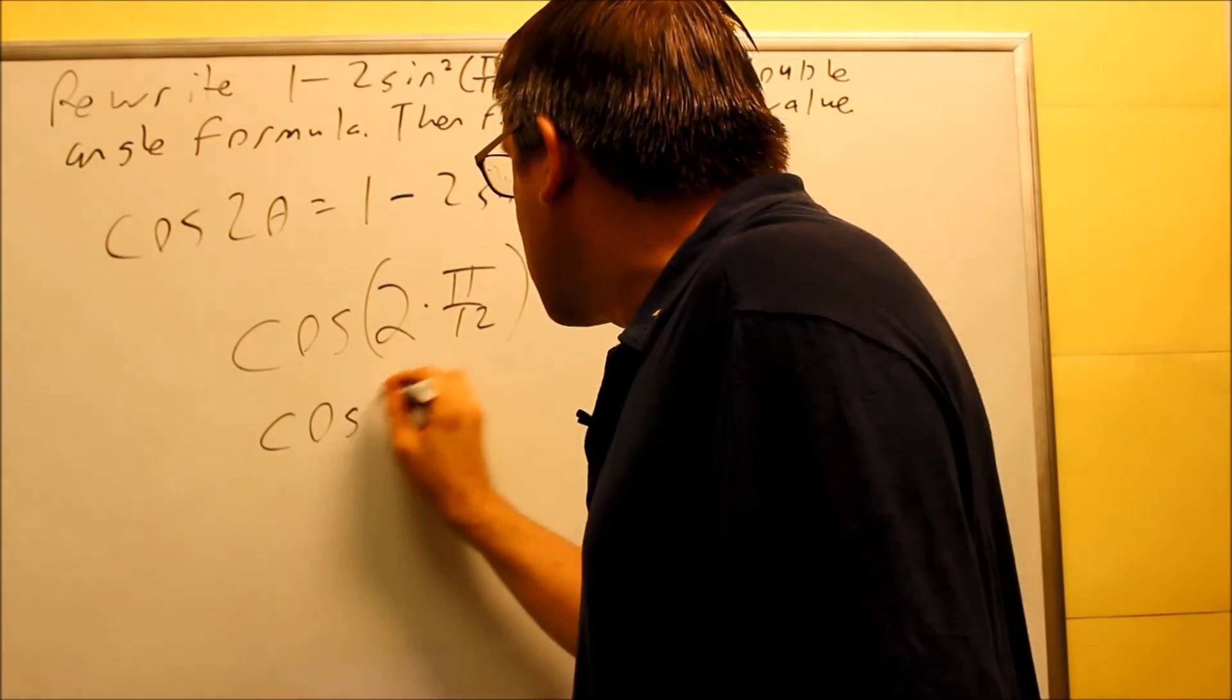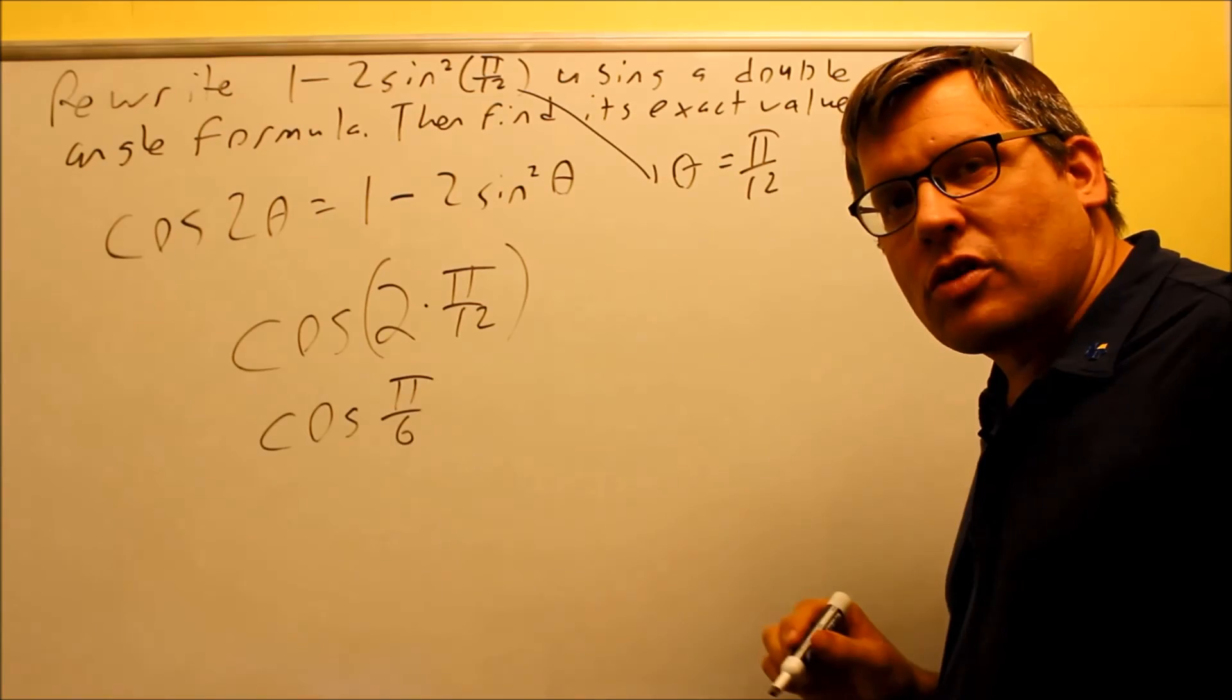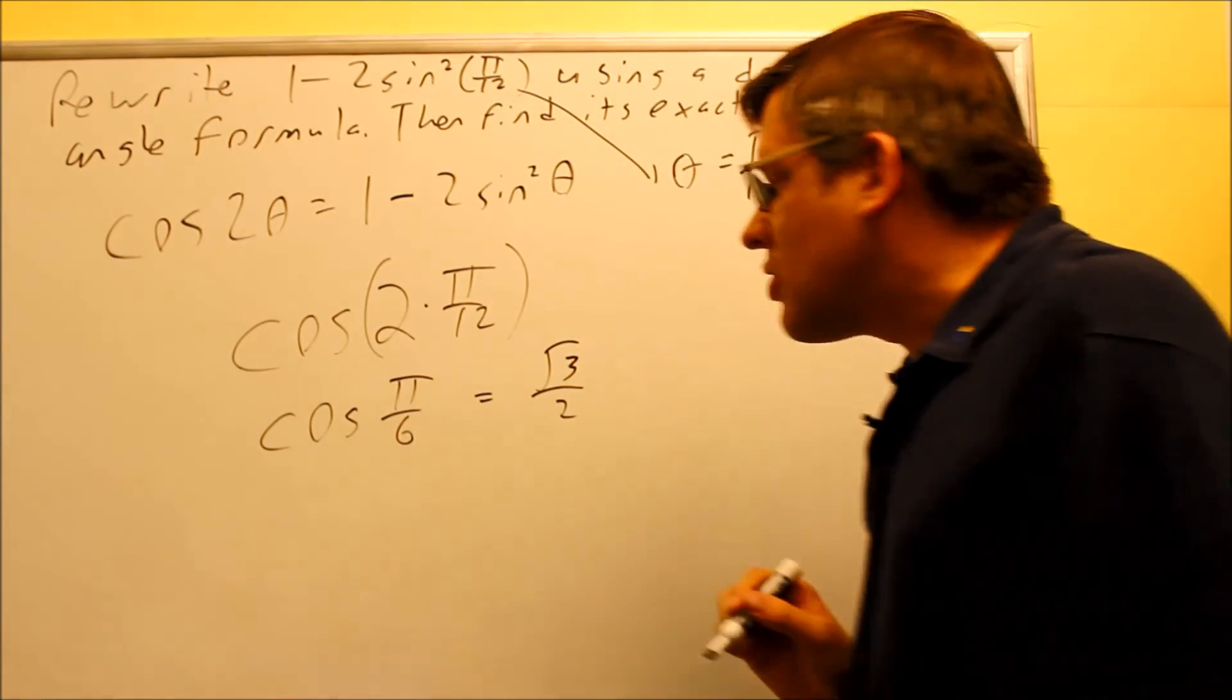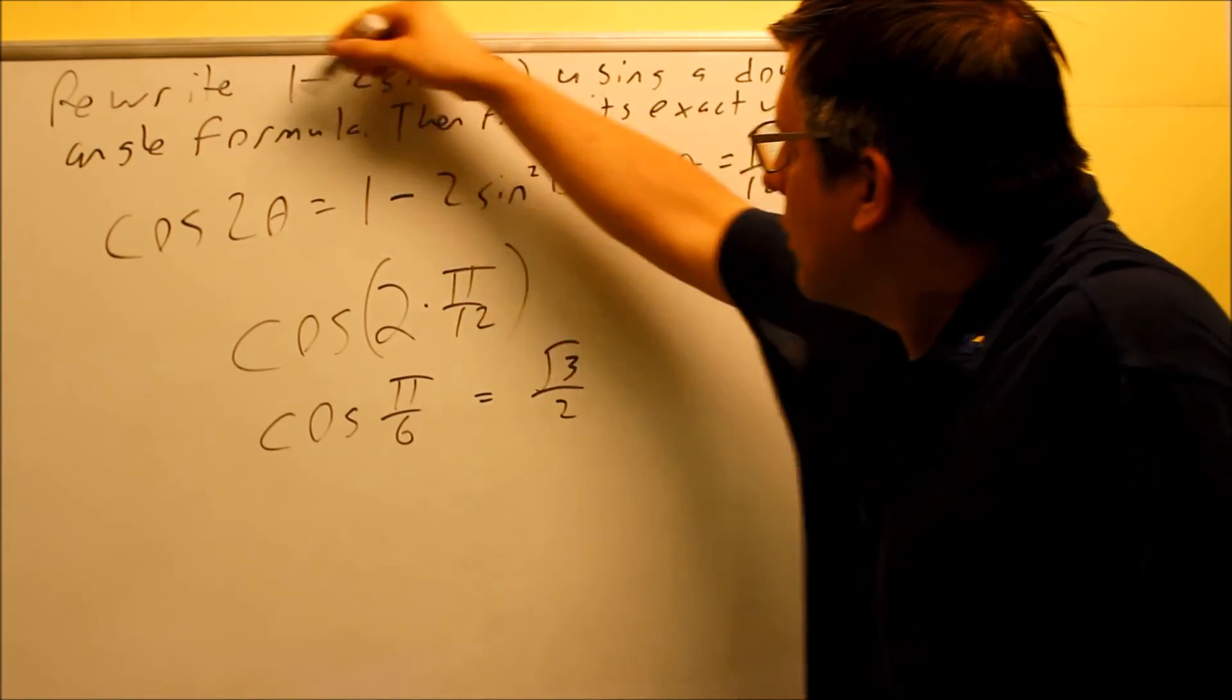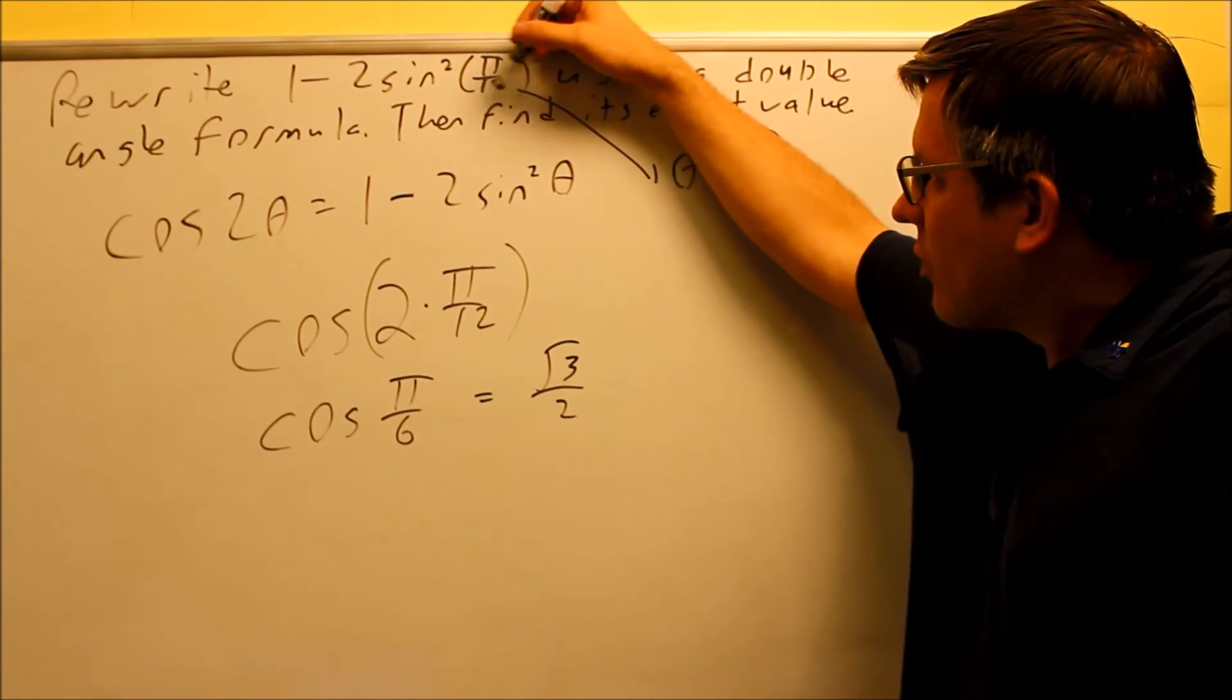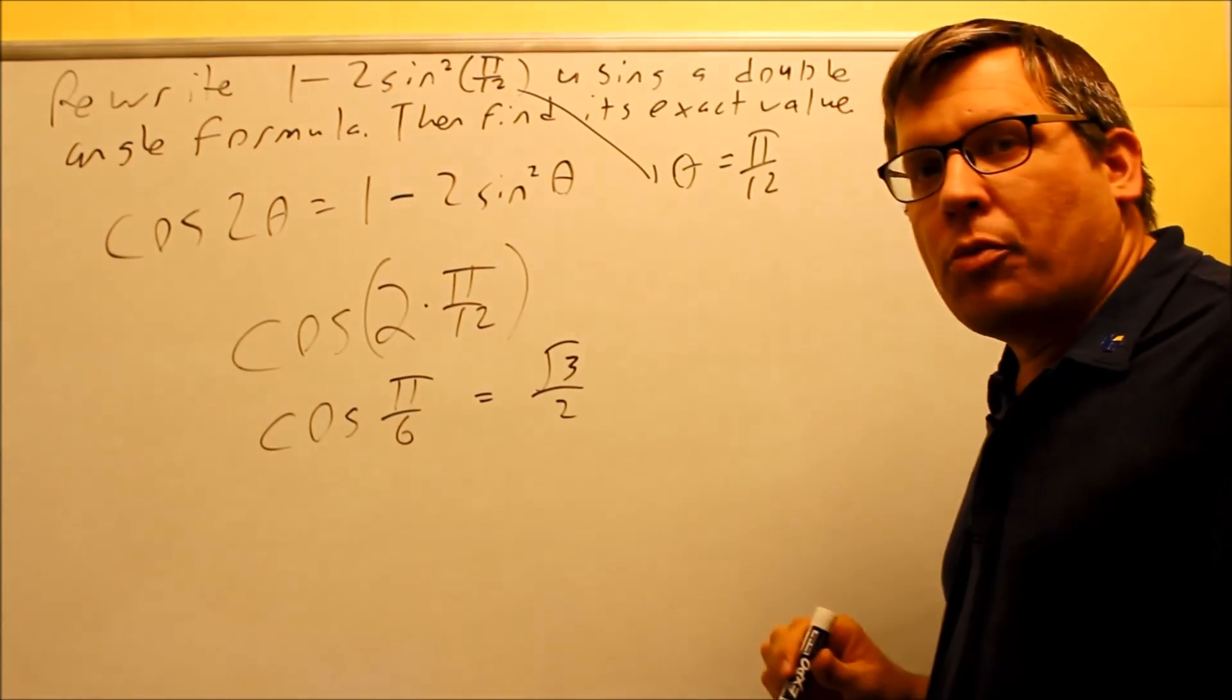This simplifies to cosine π over 6. And cosine π over 6, that is something we can get off of our table. If we look at the table, the exact value for that is going to be square root of 3 over 2, which means that all this here is going to turn into square root of 3 over 2. So even though π over 12 is not on our table, this one is because we use the double angle formula.